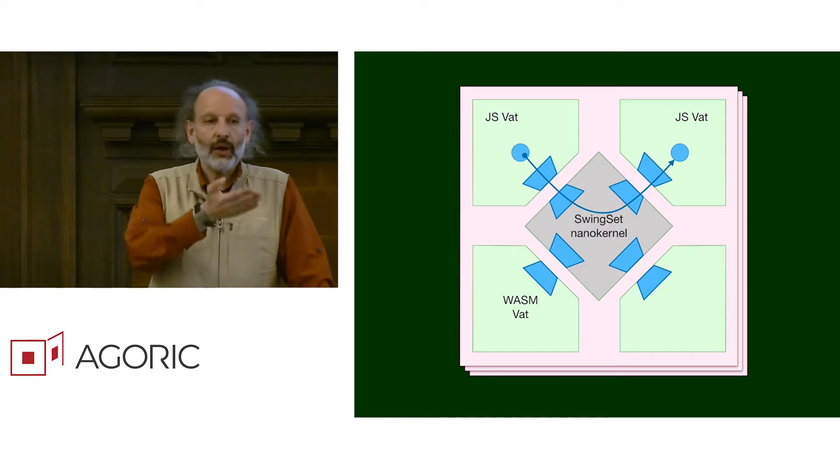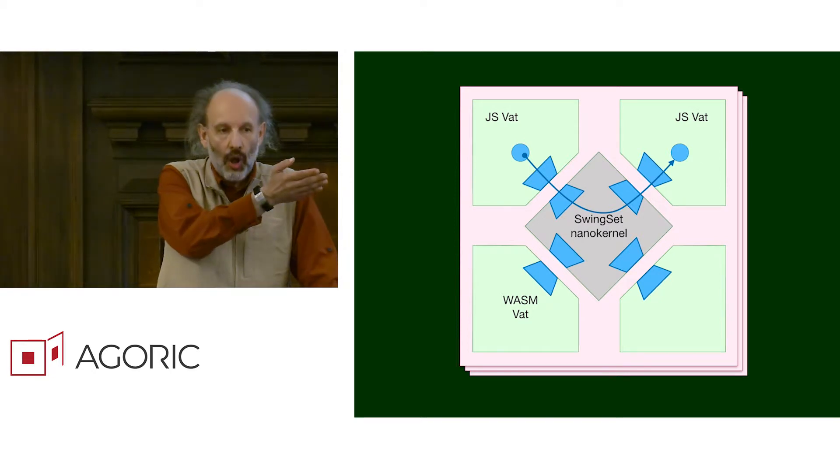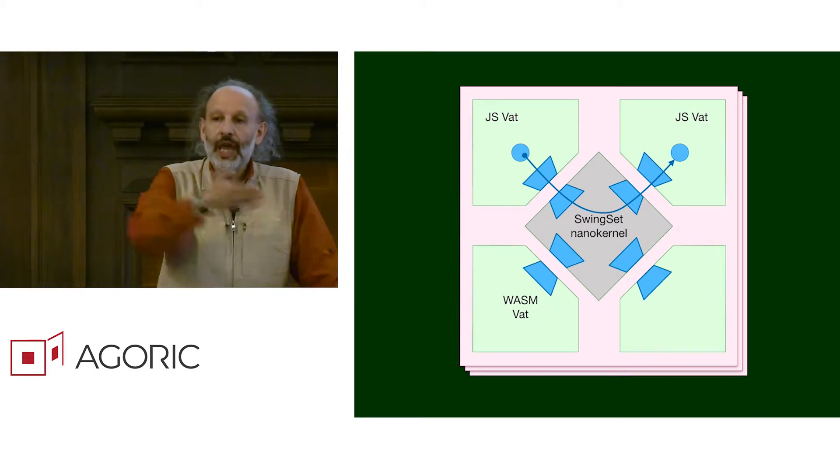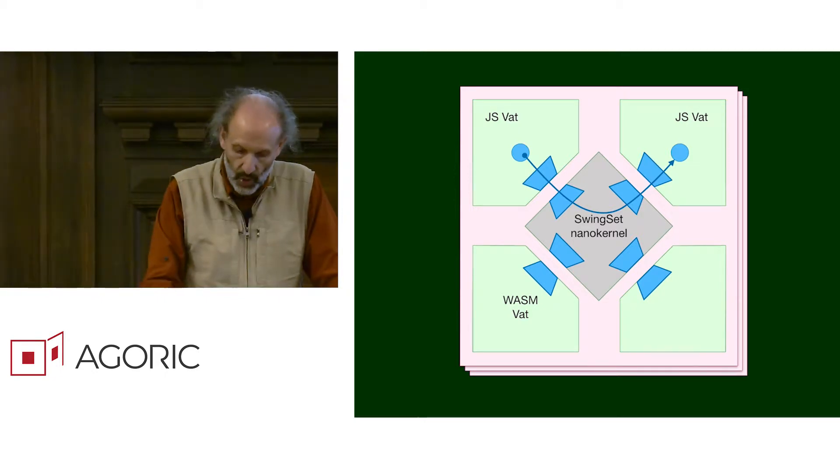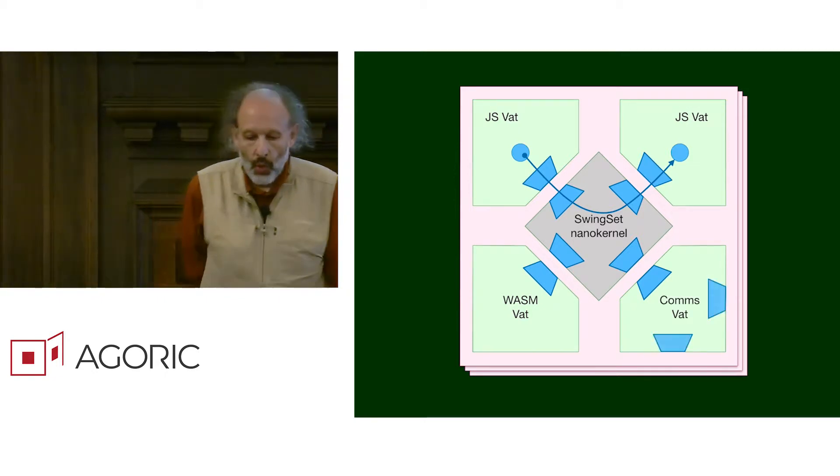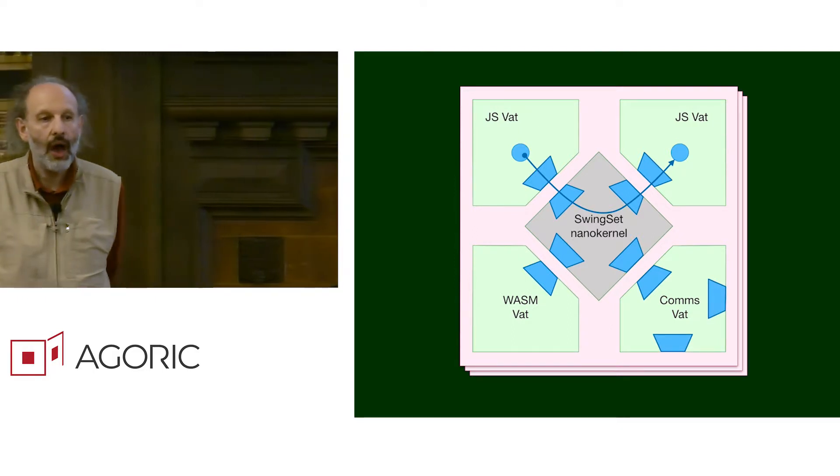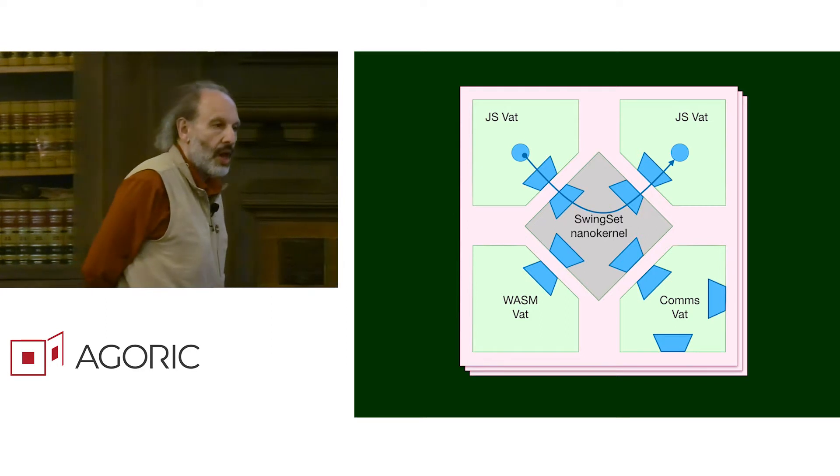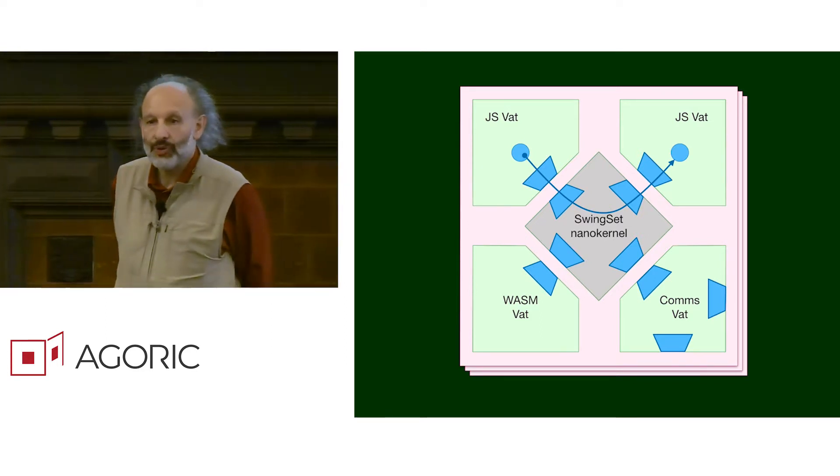What about when an object on one machine effectively holds a capability to an object somewhere else, let's say on another chain? Each swing set has a special VAT we call the comms VAT, where the comms VAT engages in the same trick.